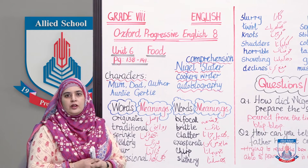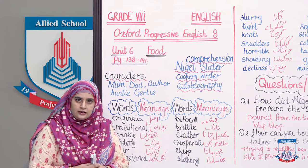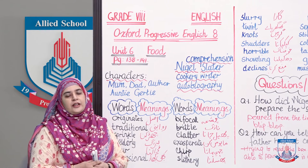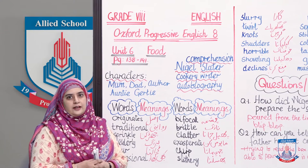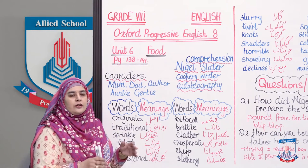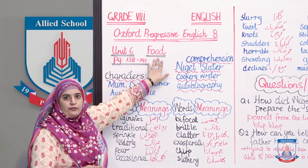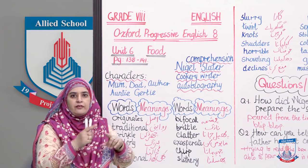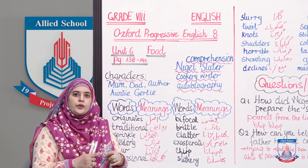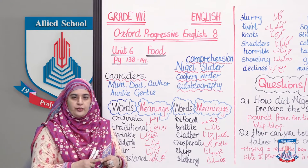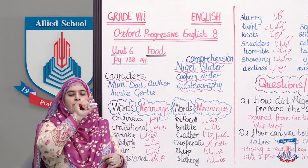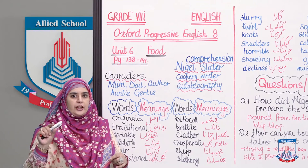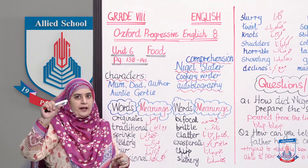Nikali? Very good. Page number khol liya? Extremely good. Jab aap English ke liye bethe ho, aapne grammar aur Oxford Progressive Reader dono nikal ke bethe. Now that you have taken your book out and opened the comprehension, I am not going to read the entire comprehension for you. What I am going to do is I am going to summarize the comprehension for you. First thing first, the first introductory paragraph at the top of your comprehension before the comprehension begins, there is a paragraph.